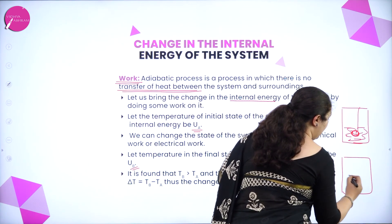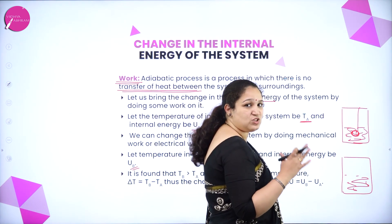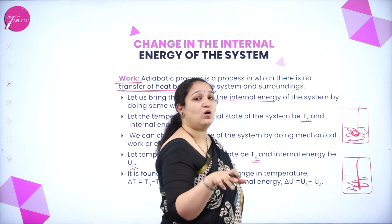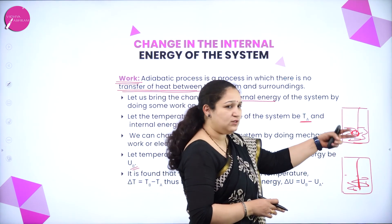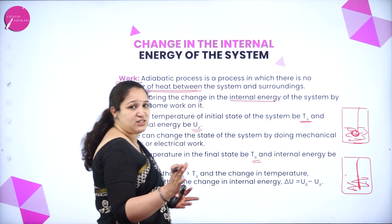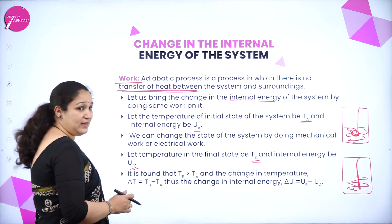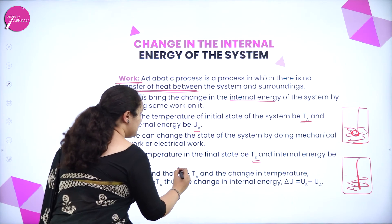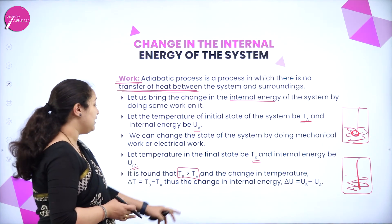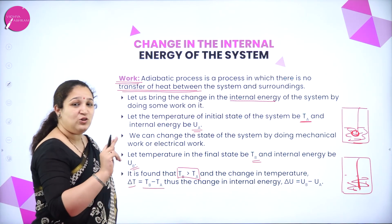I already know the initial state — I have taken some water in my system and I know the initial temperature as well as the internal energy. Now I will add a rod through which electric current is passed, so I am doing electrical work on the system. Either way — mechanical work or electrical work — the final state temperature is TB and the internal energy is UB. It is found that in any way, TB was greater than TA; the final temperature was greater than the initial temperature. The change in temperature, delta T, is equal to TB minus TA.